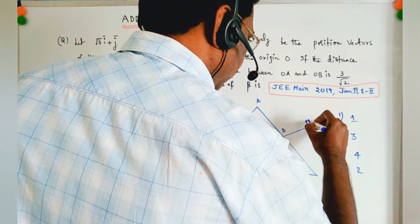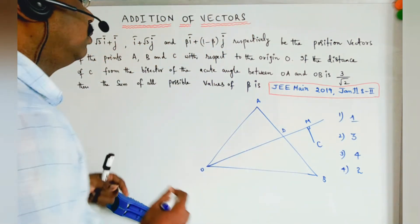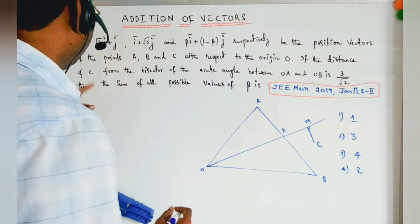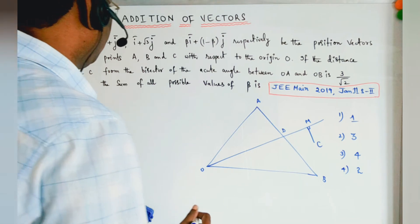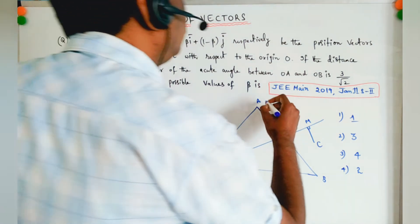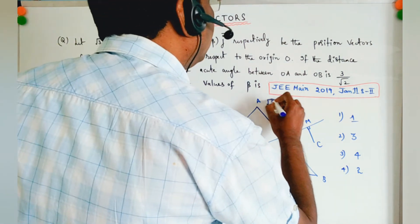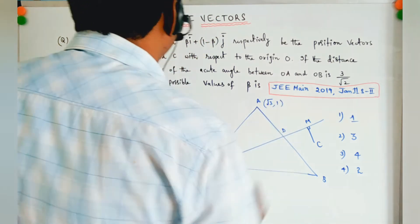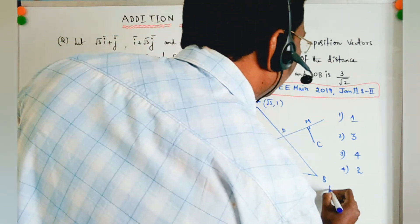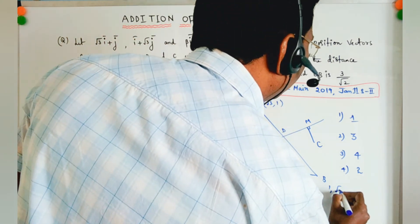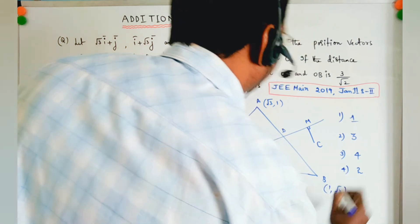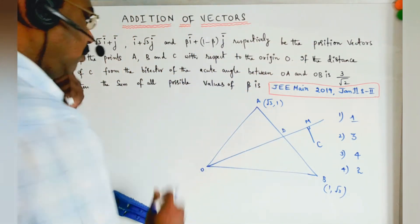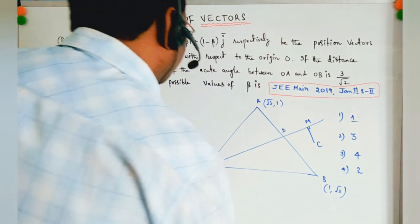From the given data, point A has coordinates (√3, 1) and point B has coordinates (1, √3), with the origin O at (0, 0). We draw the diagram marking these points and the perpendicular from C to the bisector line, labeled M.